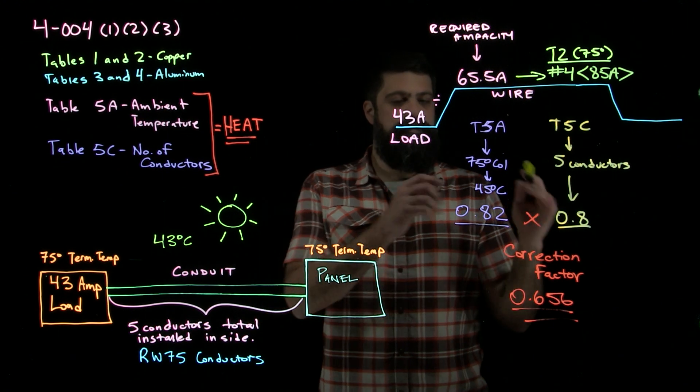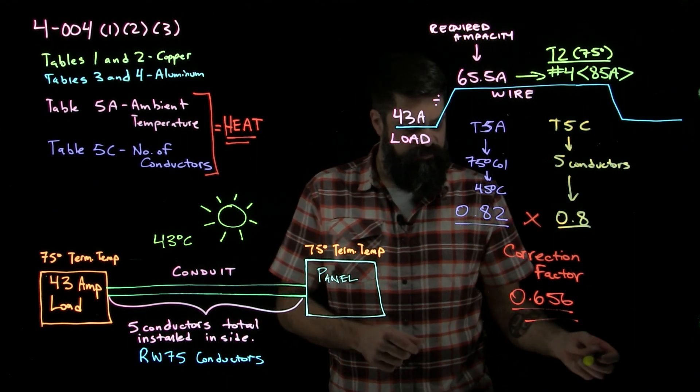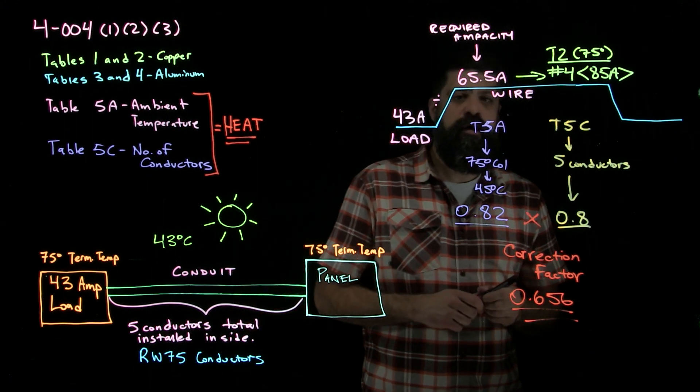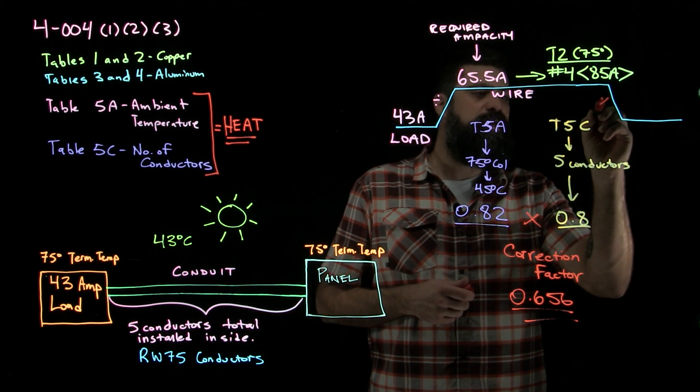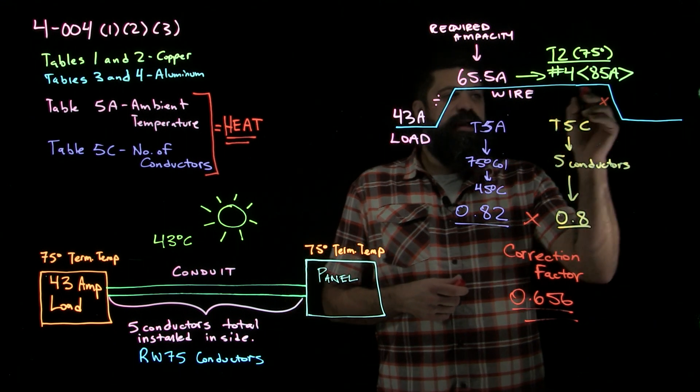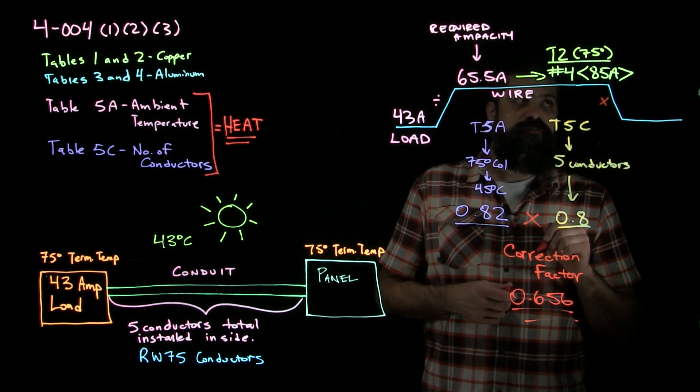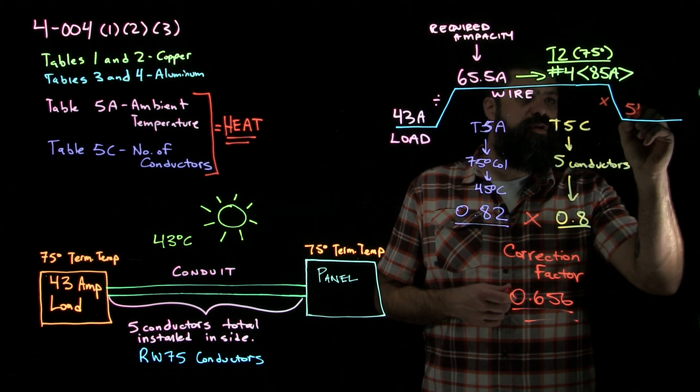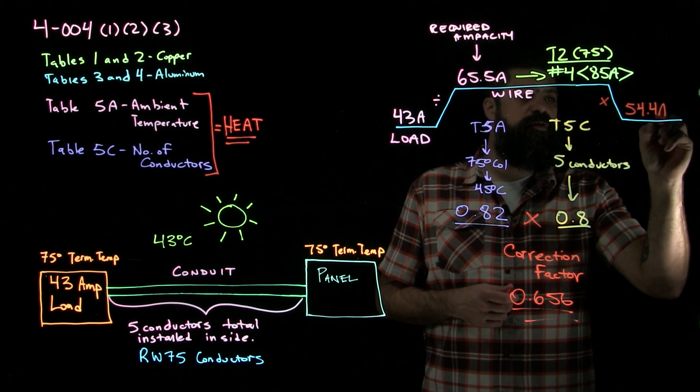However, because of the environmental factors, we can actually handle 85.5 amps on this, can we? So in order to find out what this wire is actually good for, now I multiply to bring it back down. So 85 amps, I'm still using my same correction factor of 0.656. That tells me that this number 4 now is actually only good for 54.4 amps.